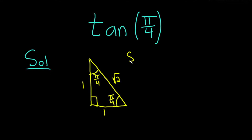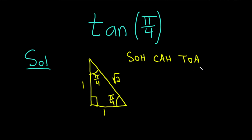This triangle together with SOHCAHTOA brings a lot of knowledge to the table. It means that sine is equal to opposite over hypotenuse, cosine is adjacent over hypotenuse, and tangent is opposite over adjacent. It will also give you the reciprocal functions if you go backwards, so it is extremely powerful.